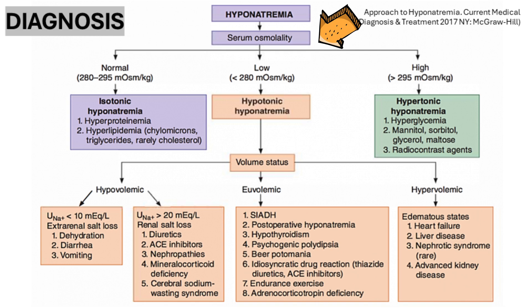When investigating a patient with hyponatremia, the first step is to measure serum osmolality. This helps rule out pseudohyponatremia, which can occur due to conditions like hyperlipidemia or hyperproteinemia. Serum glucose levels should also be assessed, as hyponatremia can result from hyperglycemia. Specifically, serum sodium decreases by approximately 1.4 millimoles for every 100 mg per deciliter increase in glucose, due to the movement of water out of cells triggered by elevated glucose levels.